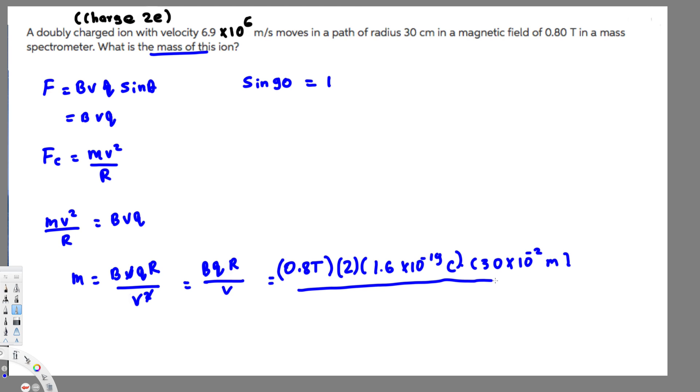In the denominator we have the velocity, 6.9 × 10⁶ m/s. If you calculate this, that's going to give you 11 × 10⁻²⁷ kilograms, and that's the mass of this particle.